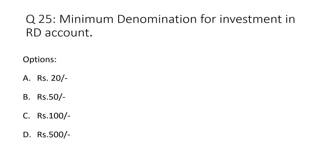Question 25 — the last question in this video: Minimum denomination for investment in RD account. Option A: Rs. 20. Option B: Rs. 50. Option C: Rs. 100. Option D: Rs. 500. The correct answer is Option C — Rs. 100. Below Rs. 100 you cannot open the account.